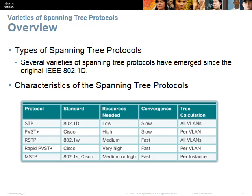Another problem with the original STP is its slow convergence time. RSTP, Rapid PVST+, and MSTP were all designed to overcome this problem. We will look at each of these protocols in more detail on the following slides.